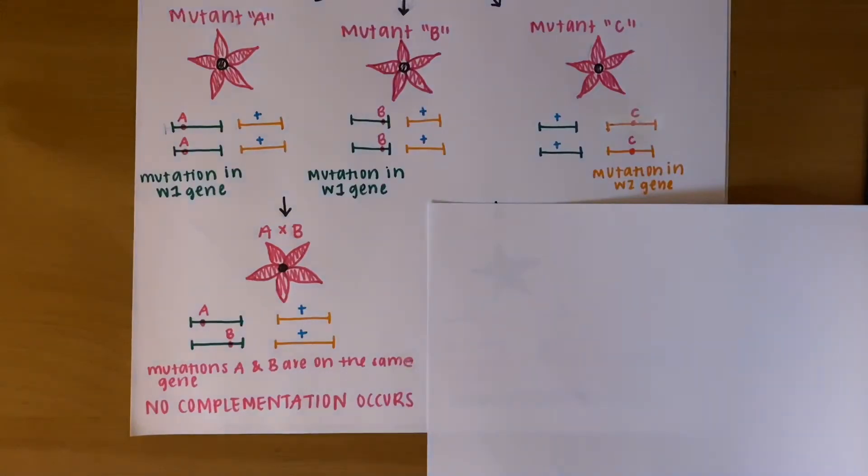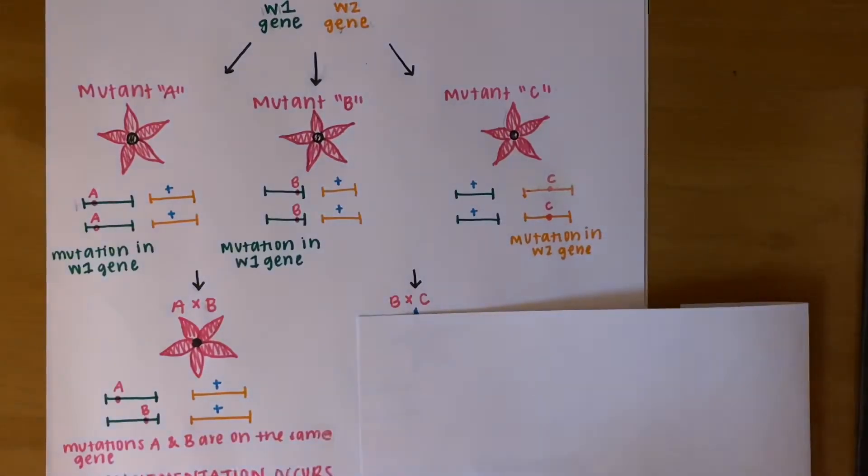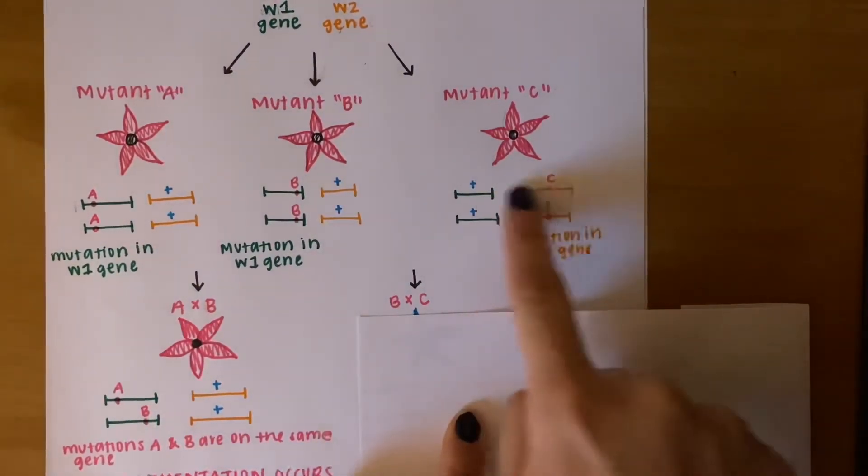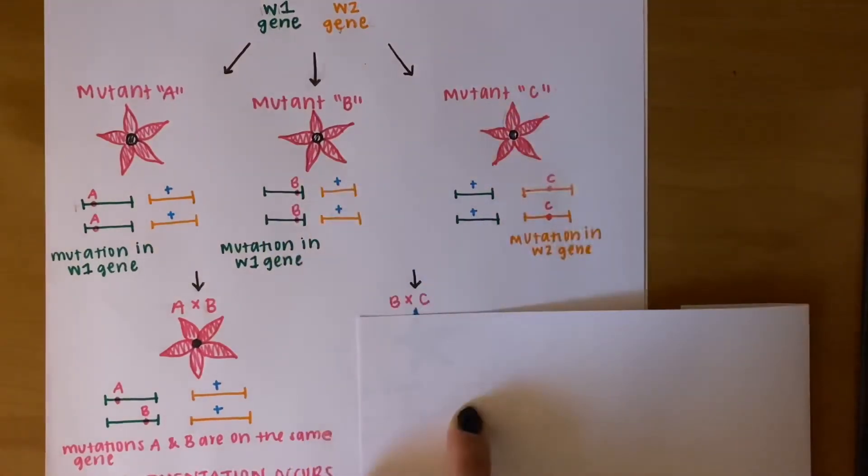Now, let's go over what B cross C would look like. So, again, we take one set of alleles from the two genes in C and the same from B. As we can see here, the mutant phenotype does not occur, but the wild-type phenotype, the blue petals, were recovered.